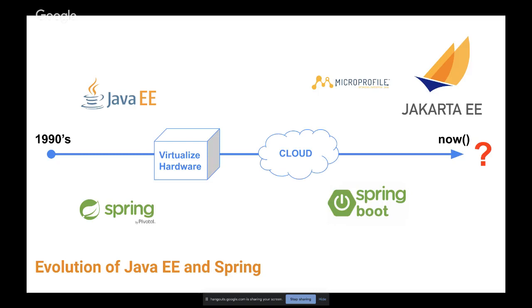At the end of the first decade of this millennium, the cloud came up and that opened even more possibilities for scaling and hosting our services. We noticed that the frameworks we already had — Java EE and Spring — were not suitable enough for that purpose, so we started to evolve them and even build separate frameworks. From the Spring community, Spring Boot emerged — a framework tailored for running in scalable cloud environments. From the Java EE ecosystem, MicroProfile emerged with the same purpose. A few more years on, Jakarta EE emerged.